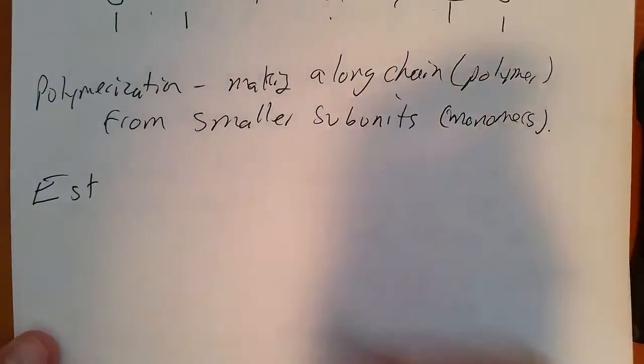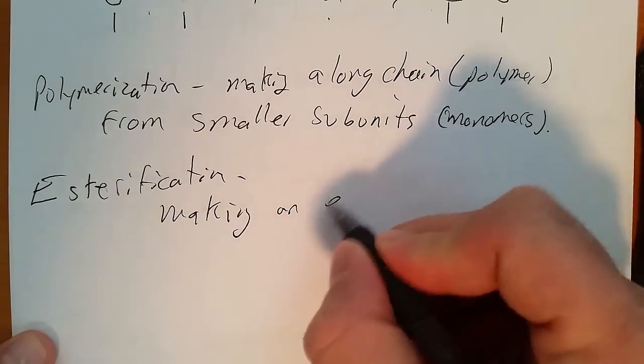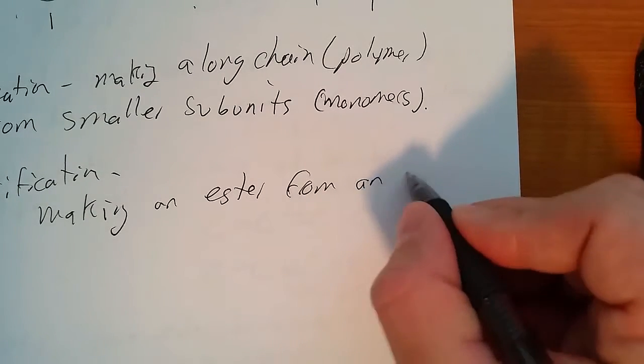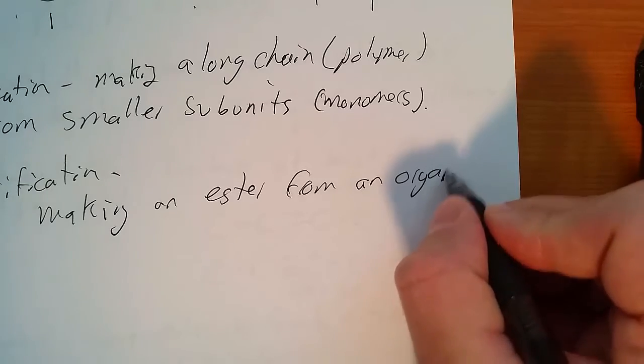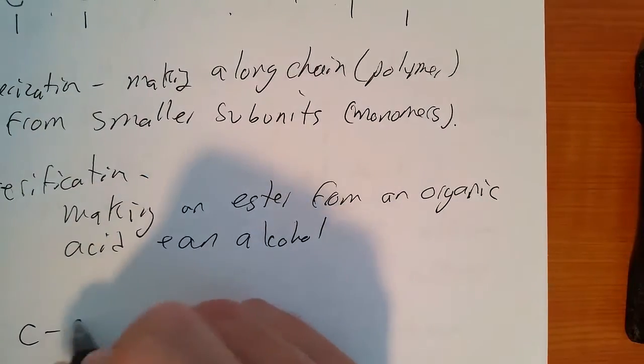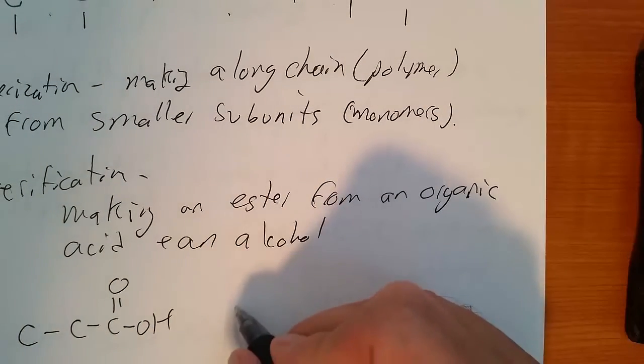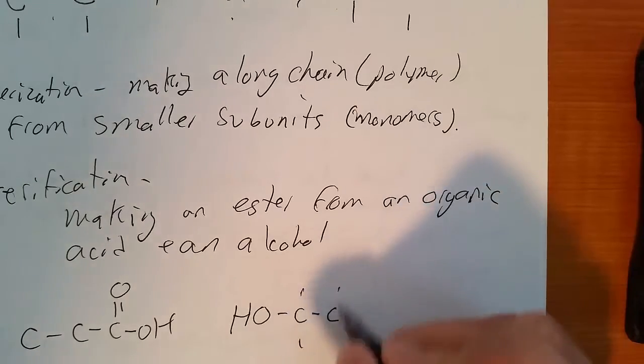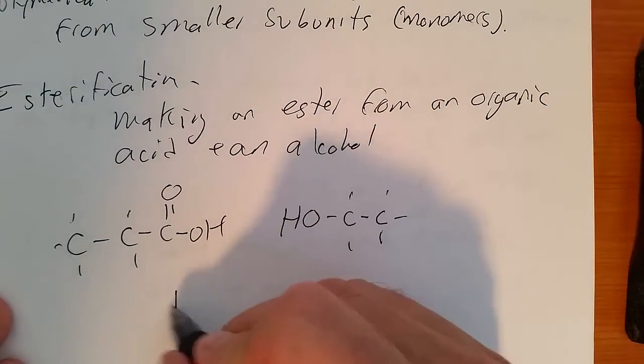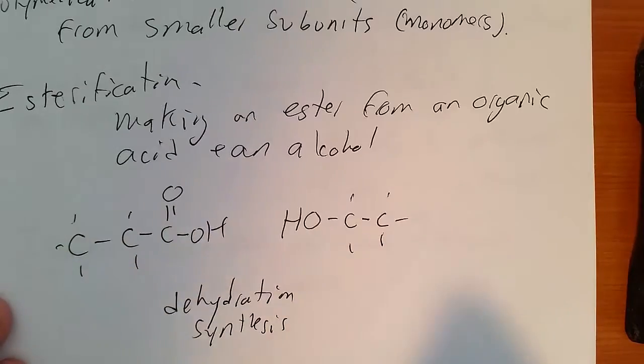Esterification. Making an ester from an organic acid and an alcohol. All right, C-C-C-C-O-OH, plus an alcohol. I'm going to draw the alcohol sort of backwards. Okay, you get dehydration synthesis. Making something by removing water. So here's our water.